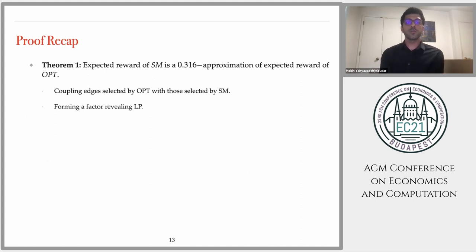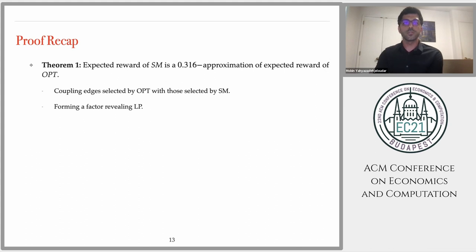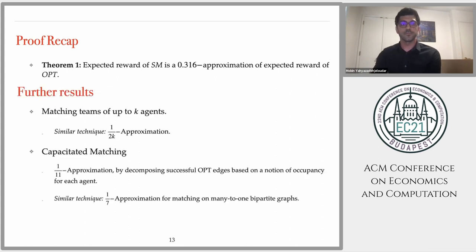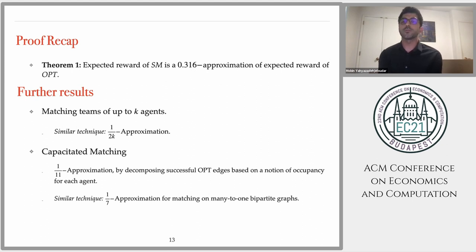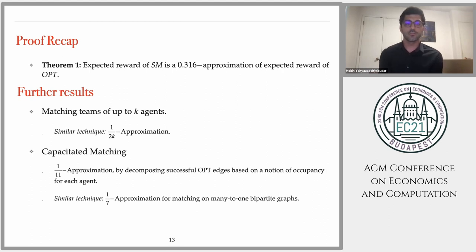In today's talk, we compared a decentralized algorithm called stable matching to the optimum online algorithm and showed it achieves a 0.316 approximation. The proof relied on a domination lemma and a charging lemma that couples edges selected by optimum with those selected by stable matching, and then we formed a factor revealing LP based on extracted inequalities. We also considered the following natural extensions: for matching in teams of OPT 2K agents, a similar technique achieves a 1 over 2K approximation. We also consider the capacitated setting where agents have a capacity and every matching must be a capacitated matching, showing a 1 over 11 approximation for this general setting by decomposing successful OPT edges based on a notion of occupancy for each agent.